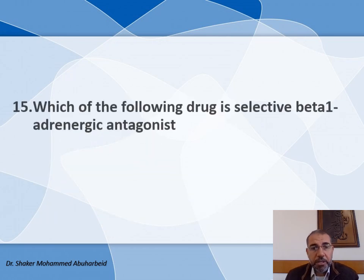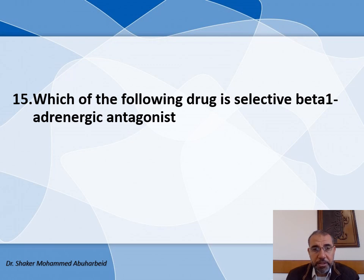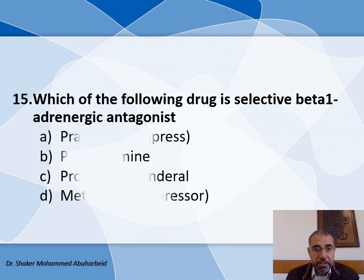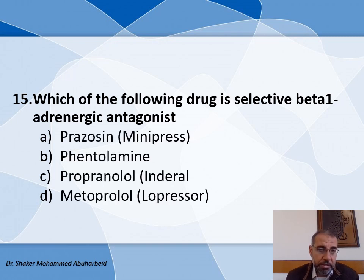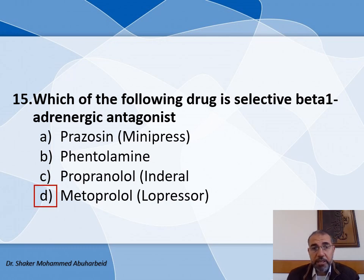Question number fifteen: Which drug is a selective beta-1 adrenergic antagonist? The choices are: A) Prazosin, B) Phentolamine, C) Propranolol, and D) Metoprolol. The pharmacologic classification of Metoprolol is selective beta-1 adrenergic antagonist, so Metoprolol is the correct answer.